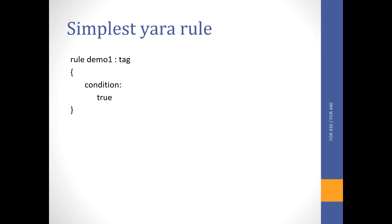The simplest YARA rule looks like this: the keyword 'rule', then the rule name 'demo_one', then a colon and optional tag, and then a condition block. Here I just wrote 'true' as the condition, which will match every file you scan. That's a very basic example.